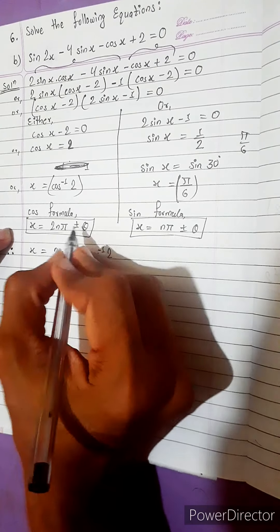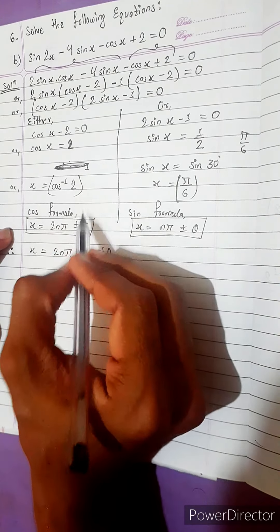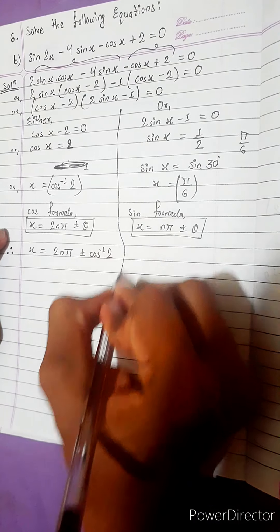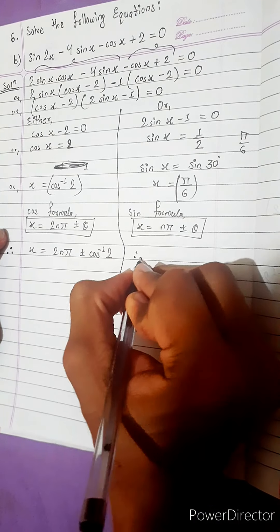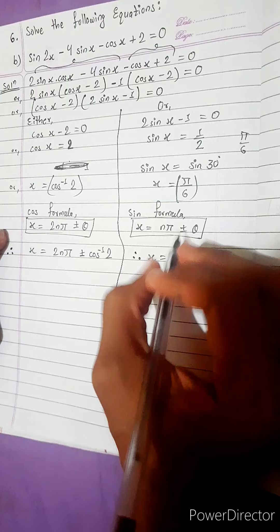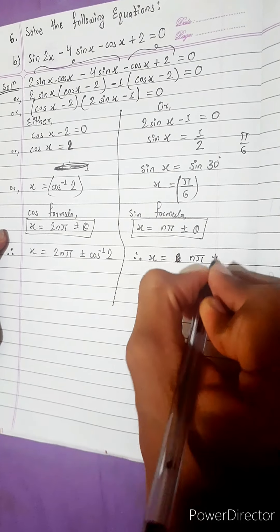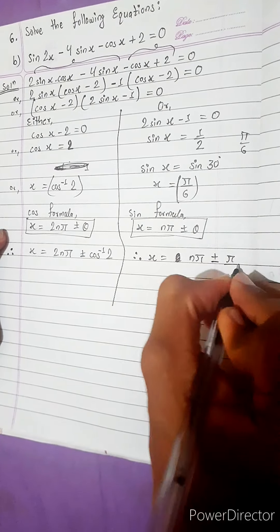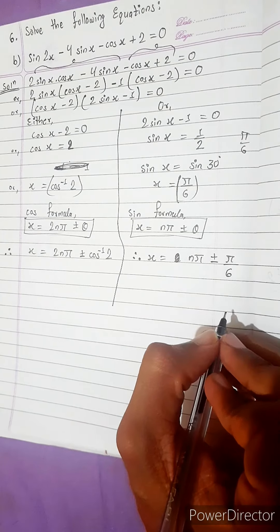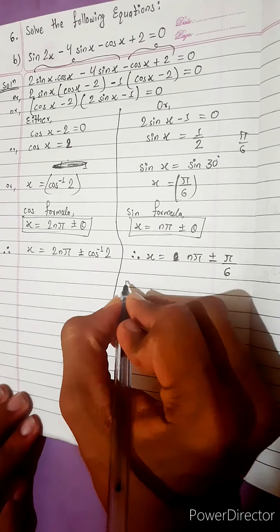So, okay. Therefore, x equals to 2 n pi plus minus cos inverse 2. This is our theta, because theta is angle. Similarly here also. Therefore, general solution of x equals to n pi plus minus theta means pi by 6.